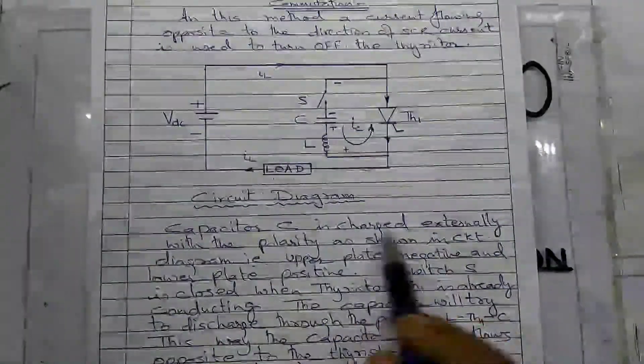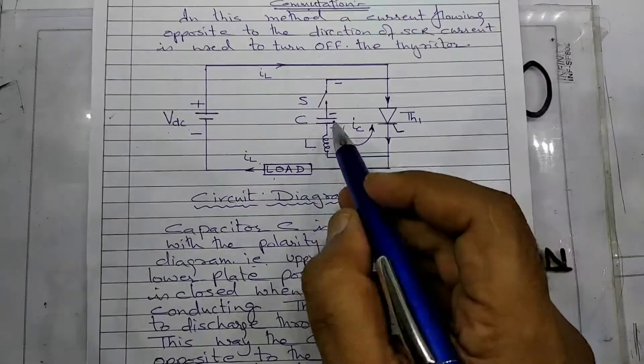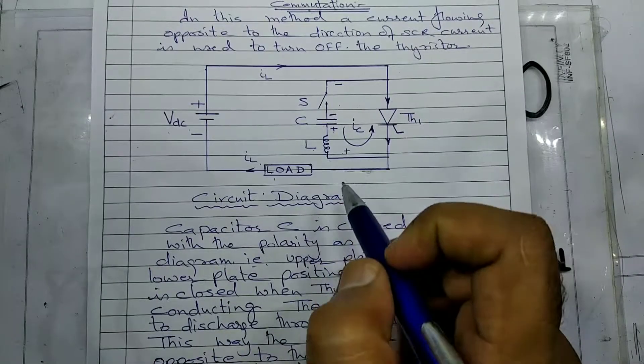Now the capacitor C is charged externally in the polarity as shown in the figure, with lower plate positive and upper plate negative.